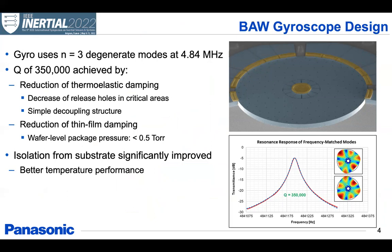Now, the gyro device that we use, as in previous generations, still operates with the n equal to 3 degenerate modes of the disk and operates at a frequency of 4.84 megahertz. Now, what's different is that our quality factors are significantly larger, in the order of 350,000. And this was achieved by reducing thermoelastic damping by minimizing or keeping the number of release holes to a minimum and simplifying the decoupling structure. We also improved the thin film damping of the part by wafer-level packaging the devices at a much lower pressure level, in the order of 0.5 torr, which is 10 to 20x improvement compared to previous generations, which were around 5 to 10 torr.